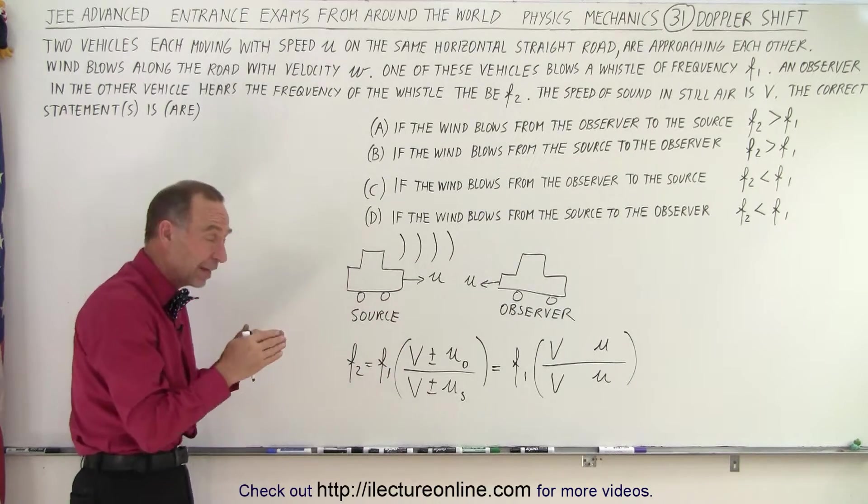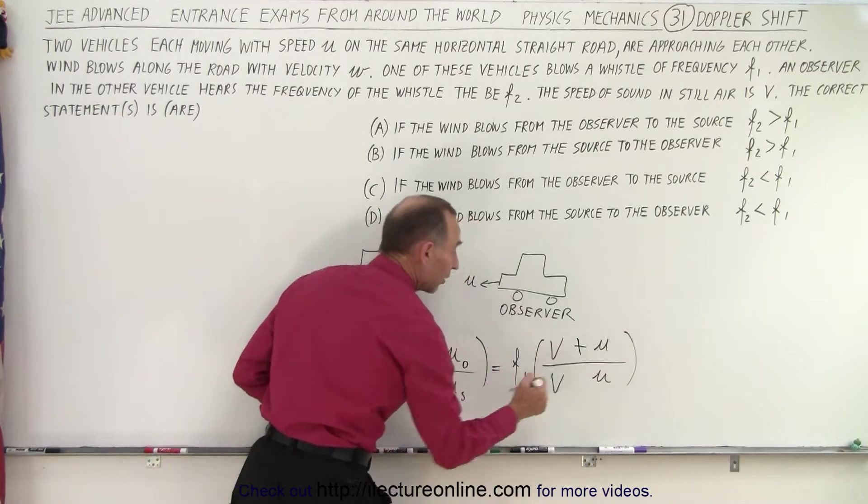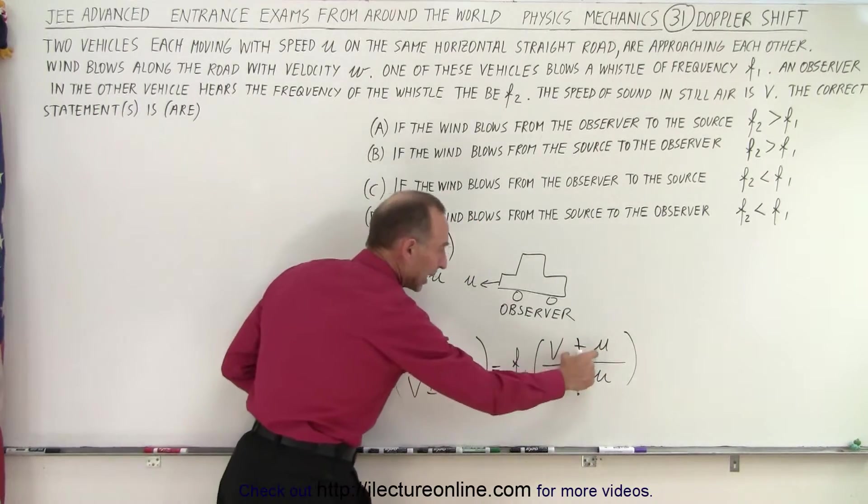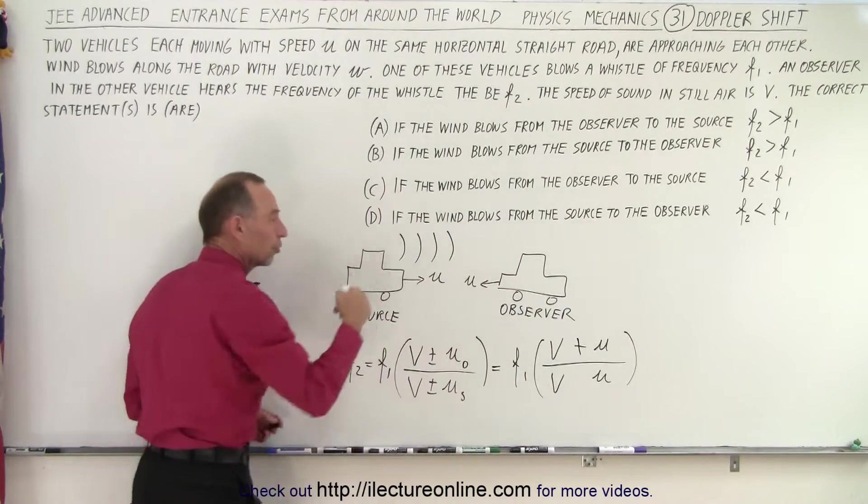Closer together means smaller wavelength, larger frequency. That means we need to have a plus here, because then the frequency observed must be greater than the frequency from the source, because the observer is moving towards the source.